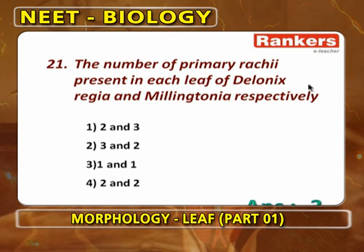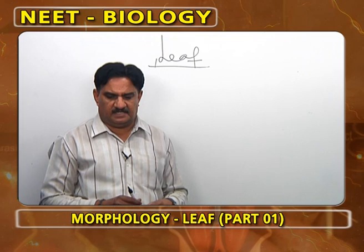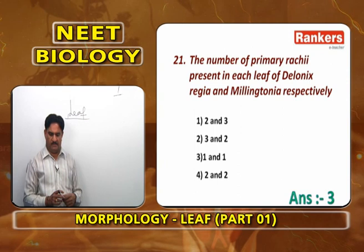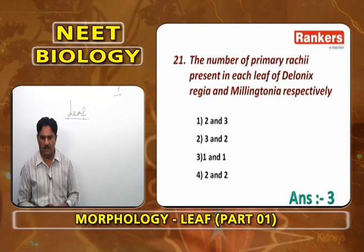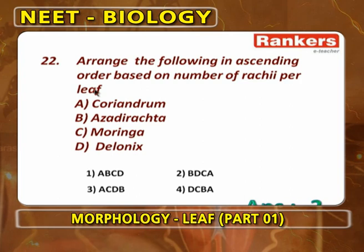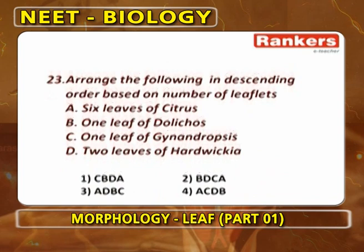Number of primary rachises in Delonix, Moringa, and Melingtonia: all have only 1 primary rachis. In Delonix, primary rachis produces secondary rachises that bear leaflets. In Melingtonia, primary rachis produces secondary, which produces tertiary rachises that bear leaflets. So primary rachis number is 1 in both Delonix and Melingtonia. Ascending order by rachis number: B (Azadirachta), D (Delonix), C (Moringa), A (Coriandrum).